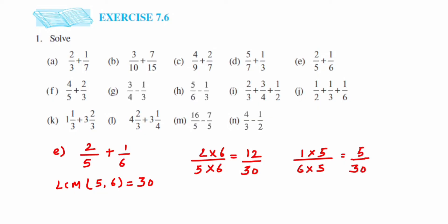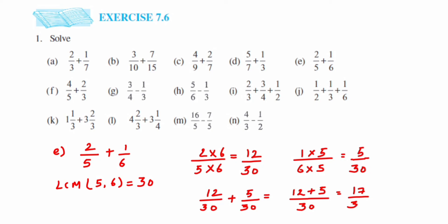Now adding 12 by 30 plus 5 by 30. Since it is now a like fraction, we keep the denominator 30 and add the numerators: 12 plus 5 is 17, so the answer is 17 upon 30. We cannot reduce this further, so we leave the answer here.